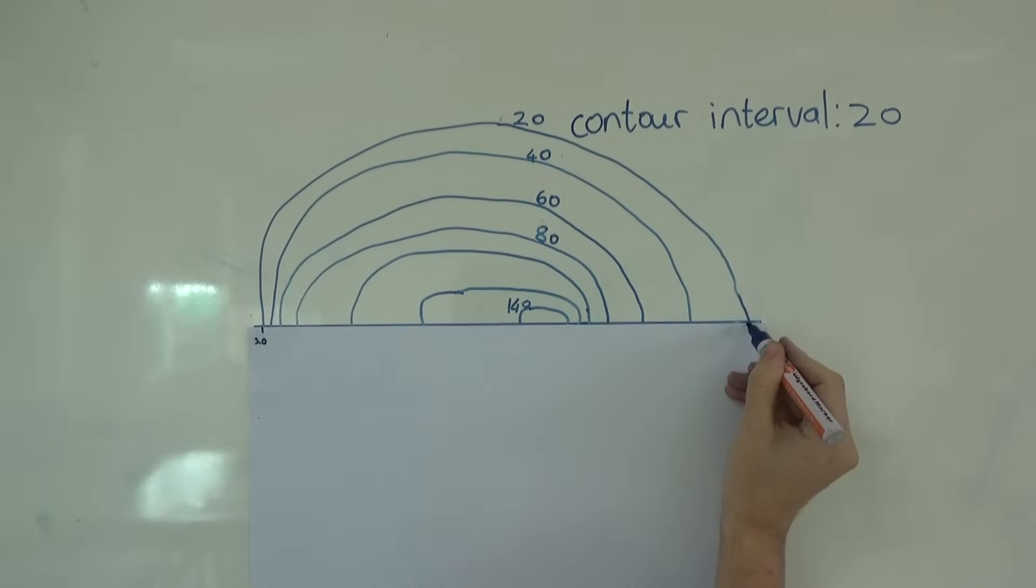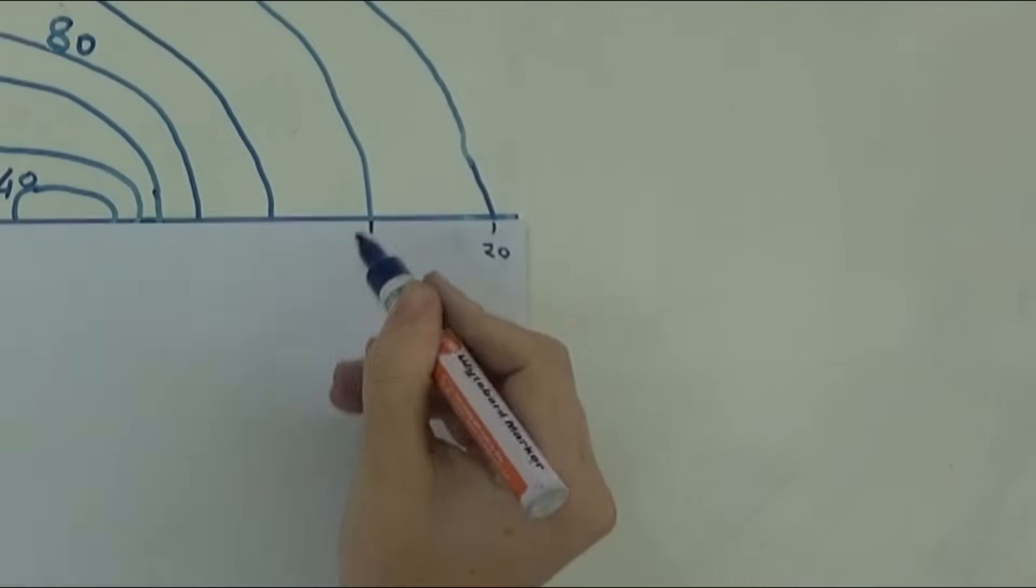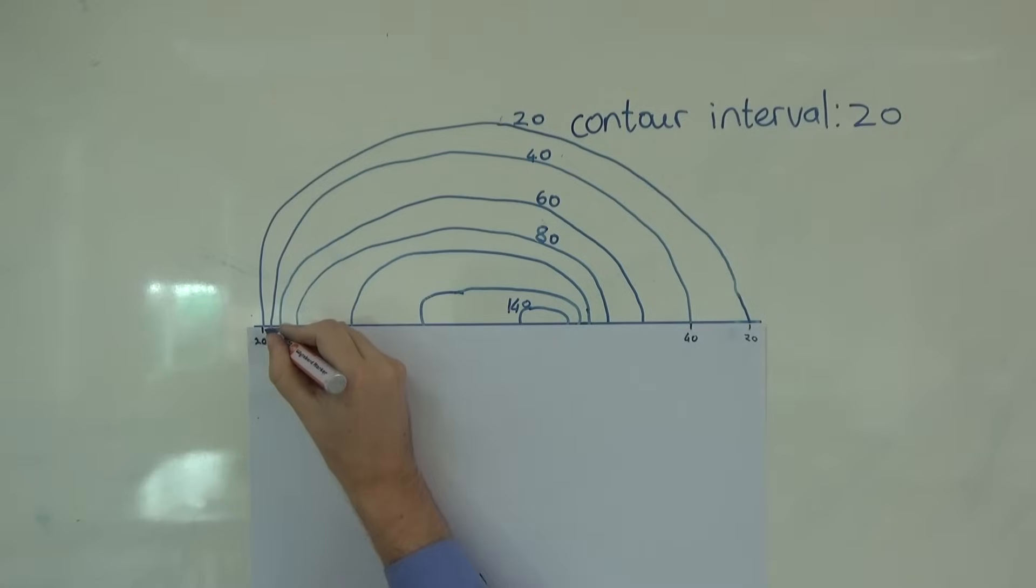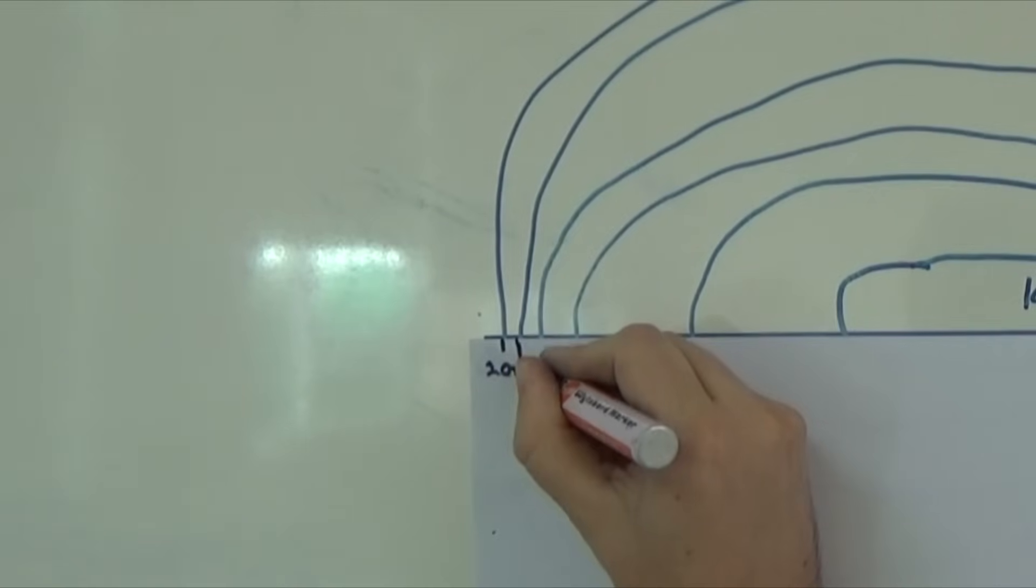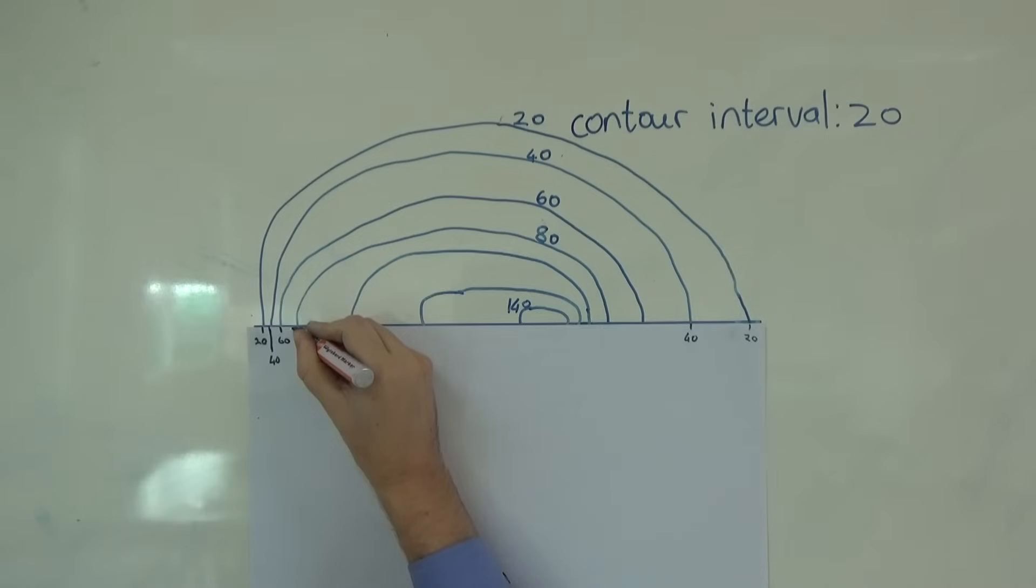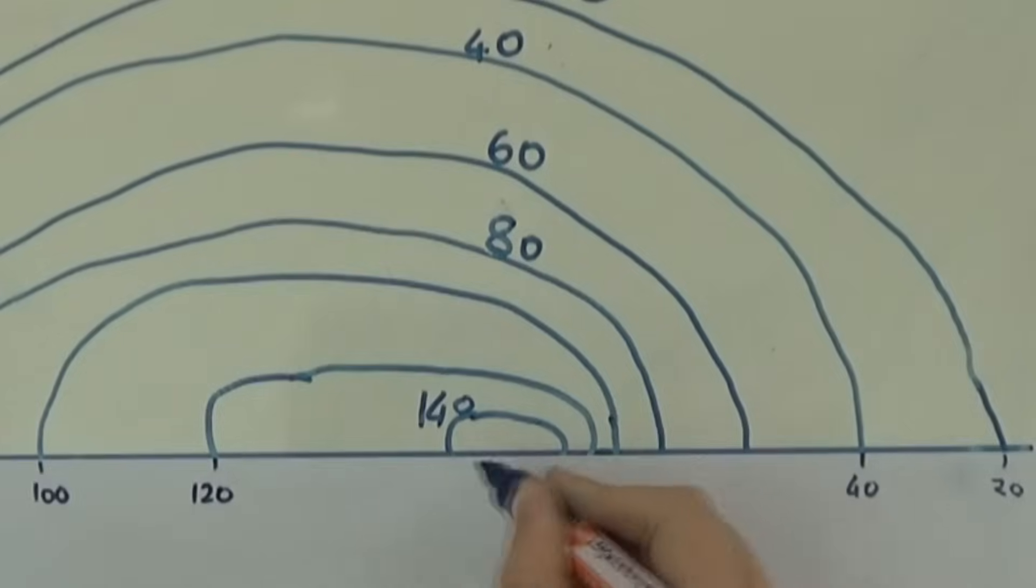Okay, then we move to the next line. We know the interval is 20, so we write 40. These ones are quite close so I'm going to draw this line down, and then the next one we know is 60, then we go to 80, 100, 120.